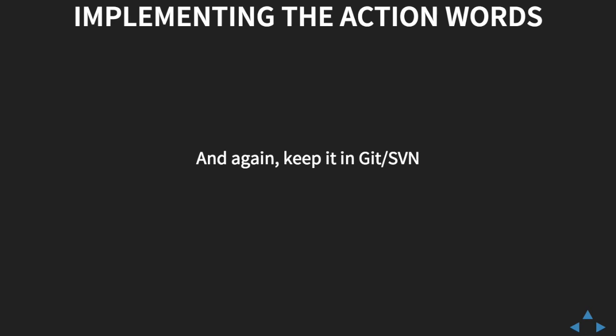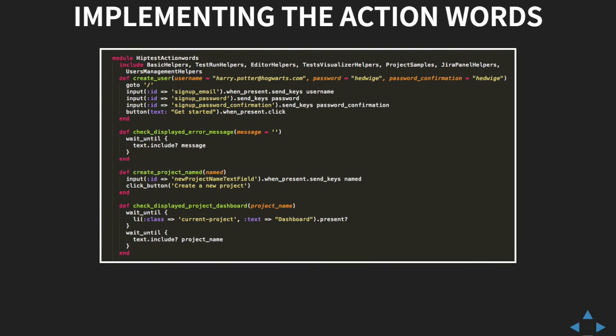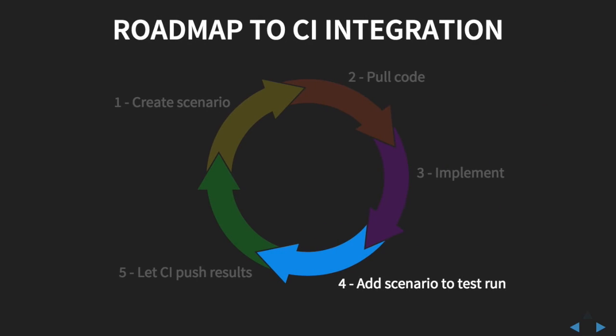Once the action words are implemented, keep them in SVN, Mercurial, whatever. The code of the action word will follow the code of your application. For example, we did a small change recently on the home page and removed the password confirmation field. So when we did that, we had to remove that part of the action word, otherwise the test would fail. And that's the main idea behind keeping action words and code in the same repository.